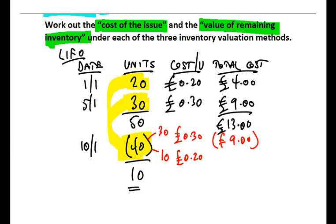Now we only need to take 10 of those bananas to make up the 40 I'm selling. Those were at 20 pence per unit when we originally bought them. Well, 10 bananas at 20 pence per unit is a total cost of £2 for that 10. Now we can therefore work out the total cost of the issue.